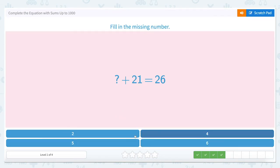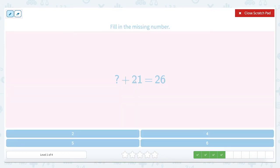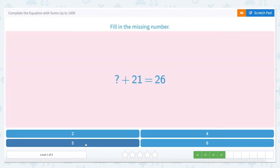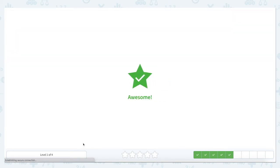This one's a multiple choice, which kind of helps us see if the answer we come up with is one of the answer choices. So let's fill in the missing number. Something plus 21 equals 26. Let's rewrite it. 26 minus 21 equals something. Well, 6 ones minus 1, 1. 5 ones, 2 tens minus 2 tens, 0 tens. Is 5 one of our answers here? It is. So let's see if 5 is correct. Awesome job.